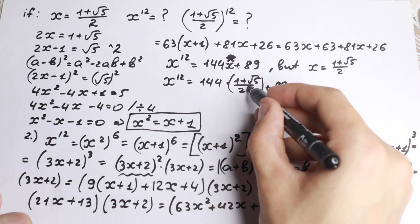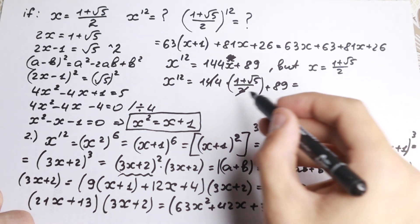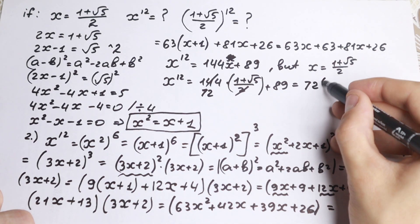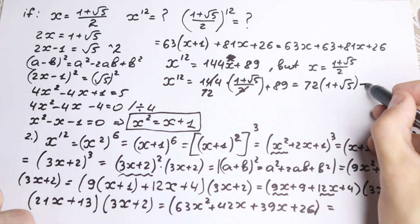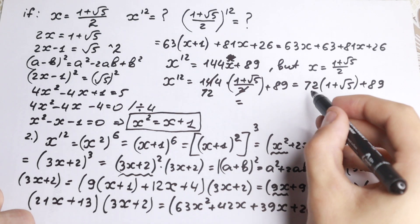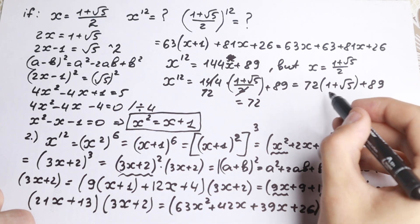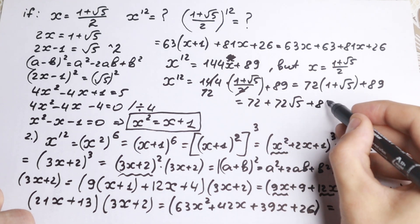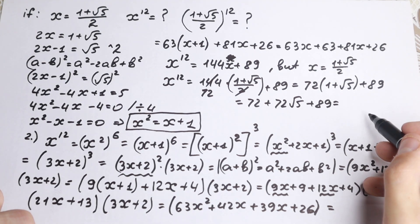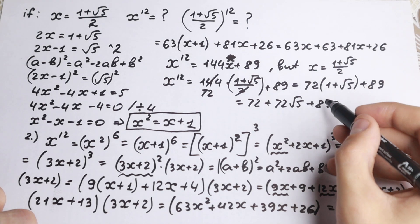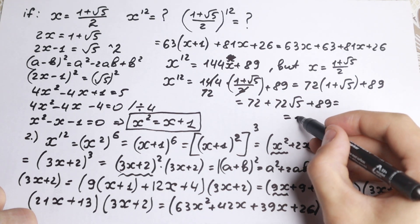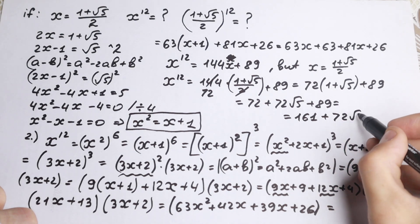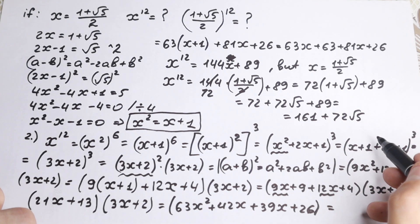Simplifying: we can cancel the 2 with the 144 to get 72. So we have 72 times (1 plus square root of 5) plus 89. Multiplying out: 72 plus 72 square root of 5 plus 89. Adding 72 and 89 gives 161. So the final answer is 161 plus 72 square root of 5.